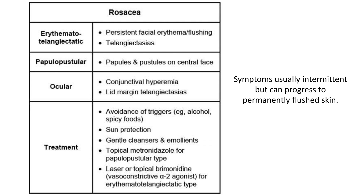There are different types of rosacea. Erythematotelangiectatic rosacea presents with telangiectasia — many visible blood vessels — and persistent facial erythema and flushing. Papulopustular rosacea includes papules and pustules on the central face. There is also ocular rosacea, which involves the eyes, with conjunctival hyperemia and surrounding lid margin telangiectasia.